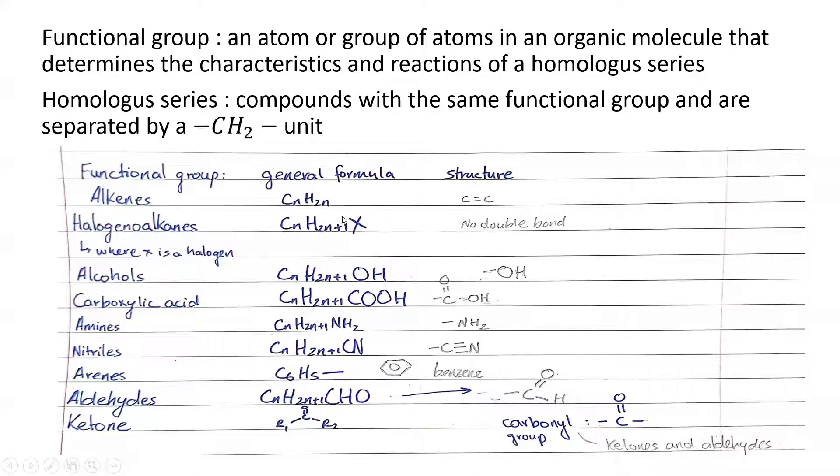Okay, so just take note of the structures and the functional groups. So for AS, you don't need to know arenes and amines as much. They come out in A2, aldehydes, ketones, nitriles, carboxylic acids, alcohols, halogenyl alkanes. Alkenes and alkenes are required for AS. So for alkenes, it's characterized by a carbon-carbon double bond. For halogenyl alkenes, it's characterized by the X bond, where X can be a halogen.